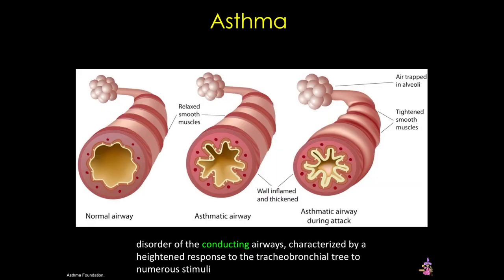Let's move down the respiratory tree to the bronchi and the bronchioles. Asthma is a chronic inflammatory process characterized by reversible narrowing of these airways, or bronchoconstriction. The classic symptoms of asthma are wheezing, cough, and shortness of breath, or dyspnea. Asthma can be triggered by many different things, including repeated exposure to irritants or allergens, and these triggers can vary from person to person.